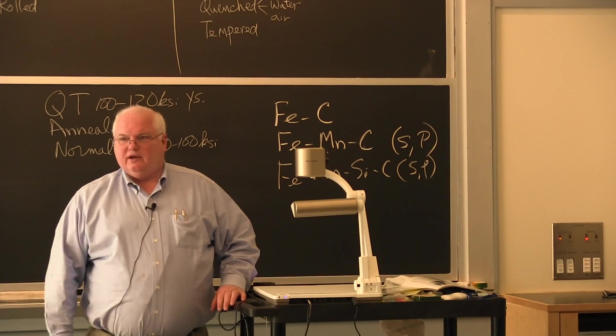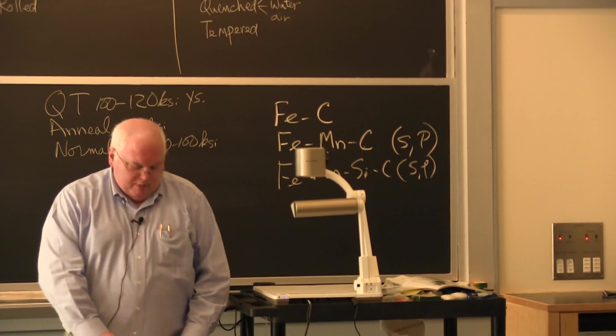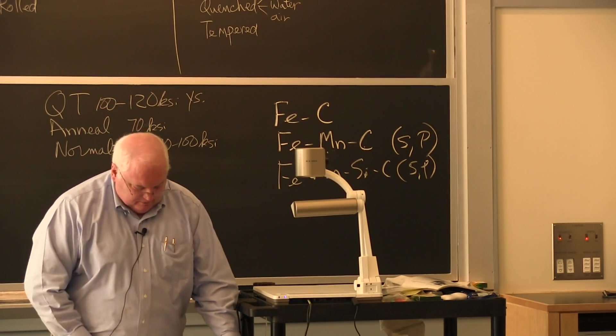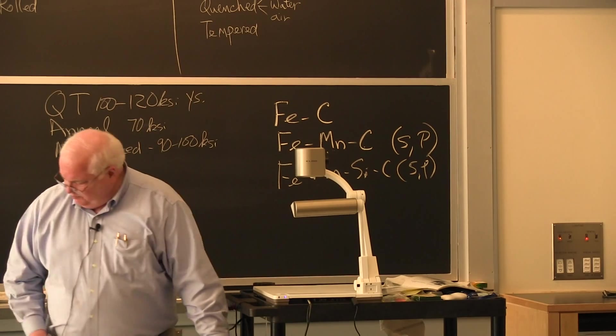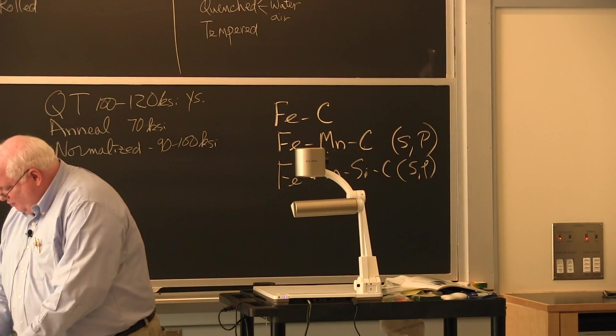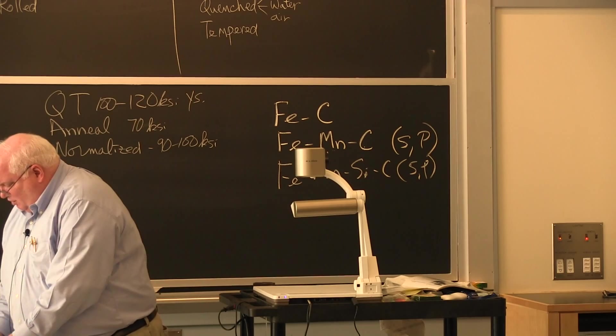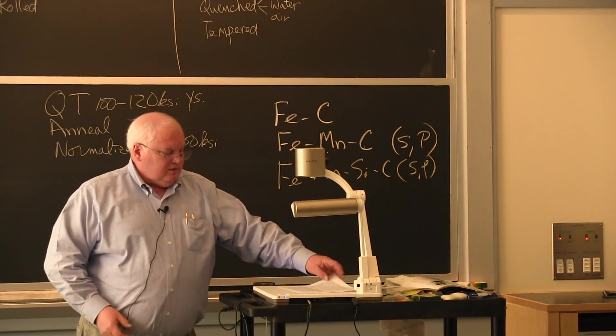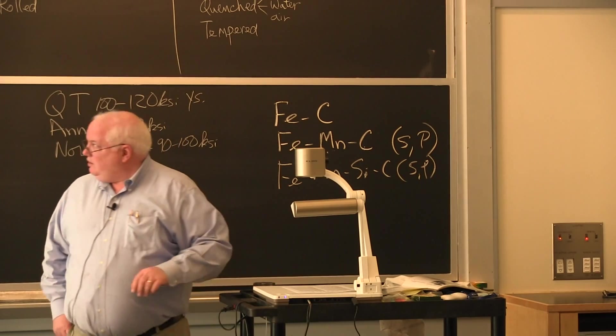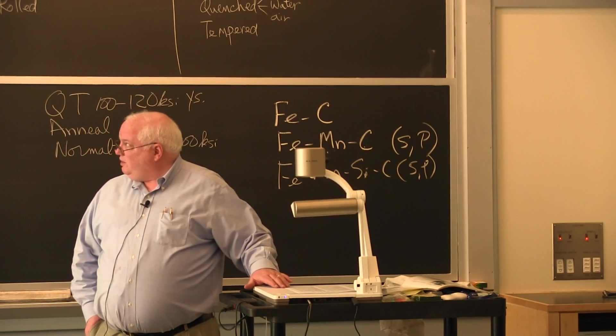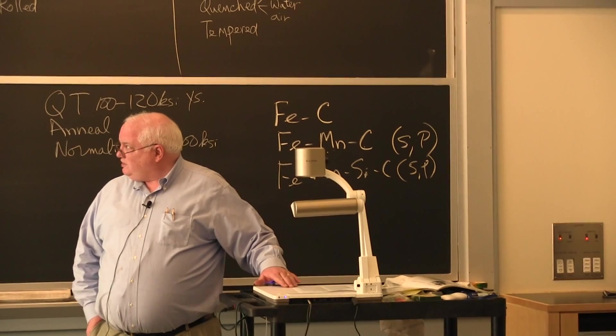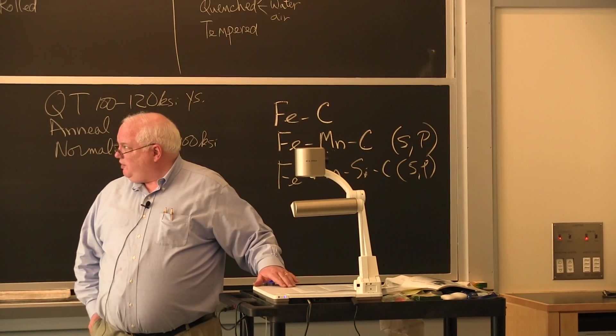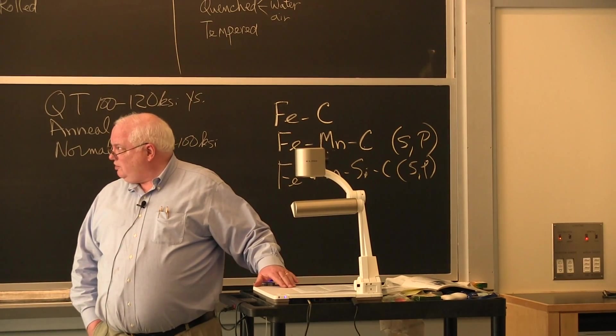So that's some general steelmaking technology. If I go back to some of these phase diagrams again, transformation diagrams, we talked about hardening and hardenability. Hardenability is the relative ability of a ferrous alloy to form martensite when quenched above the upper critical temperature.